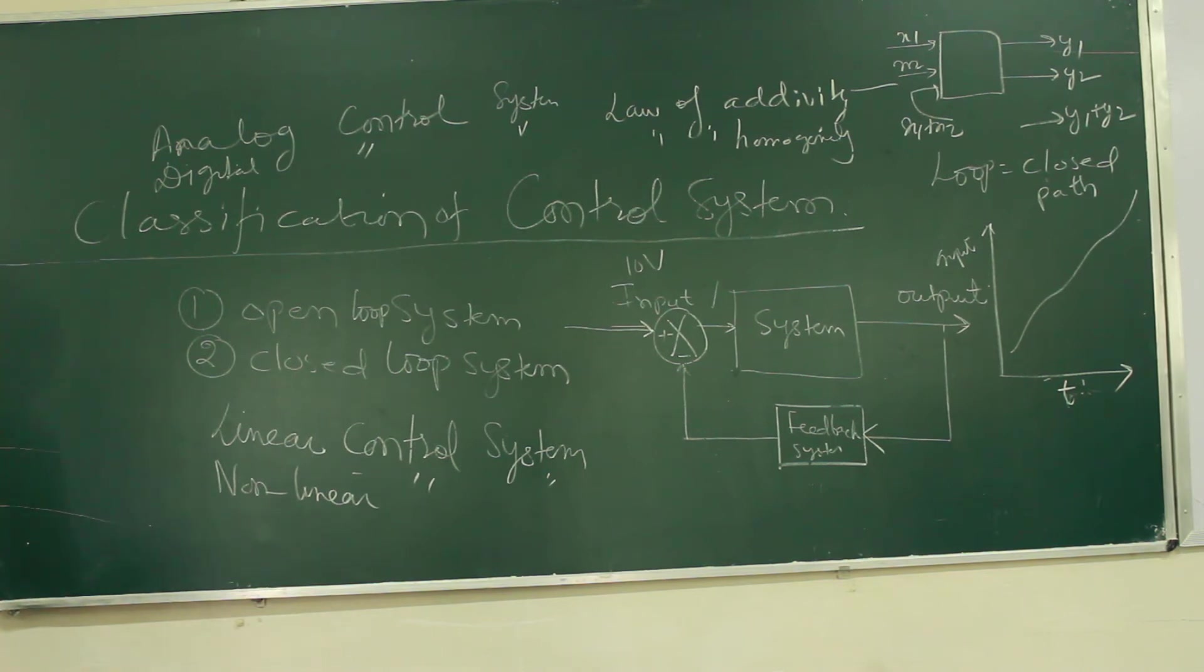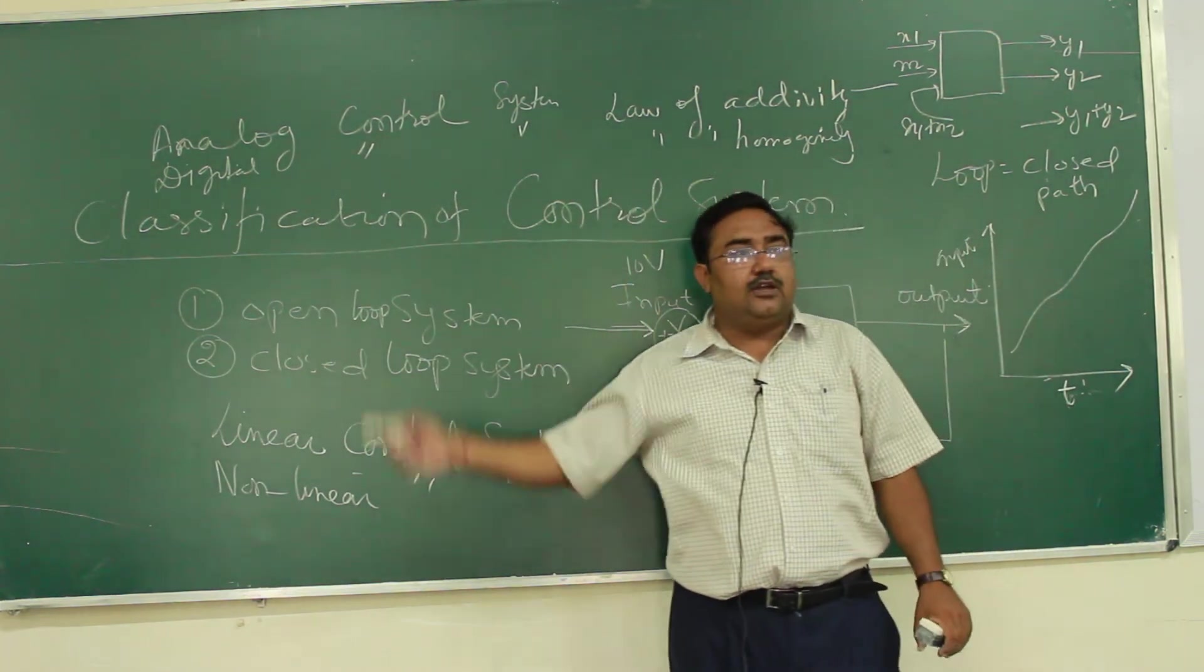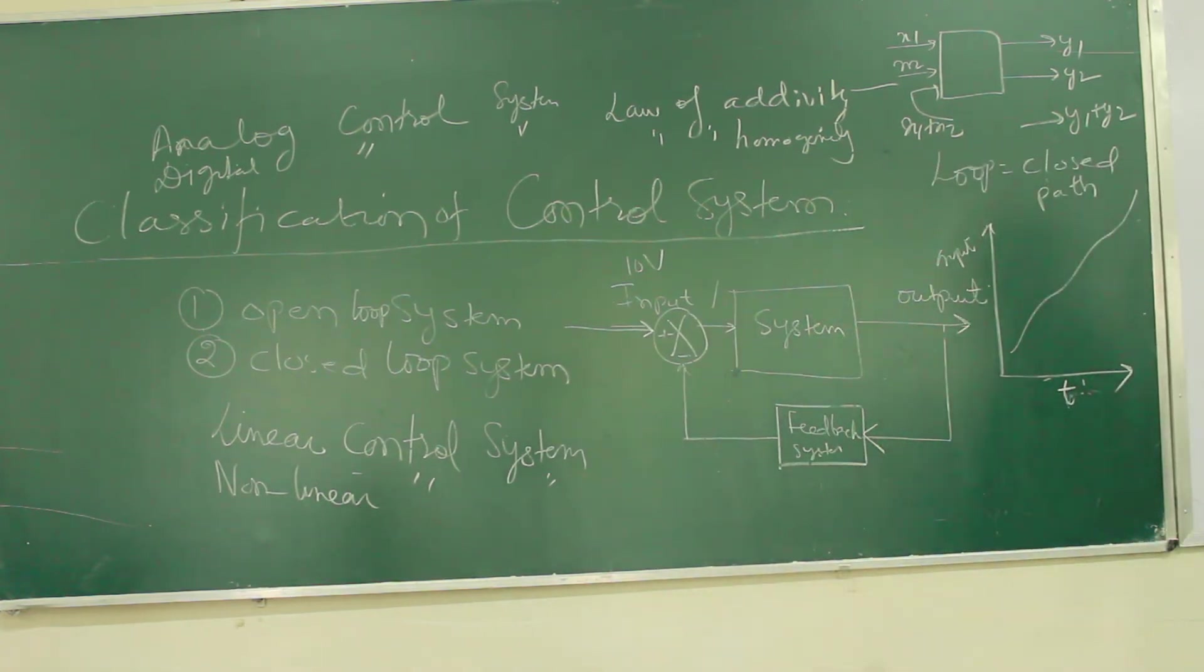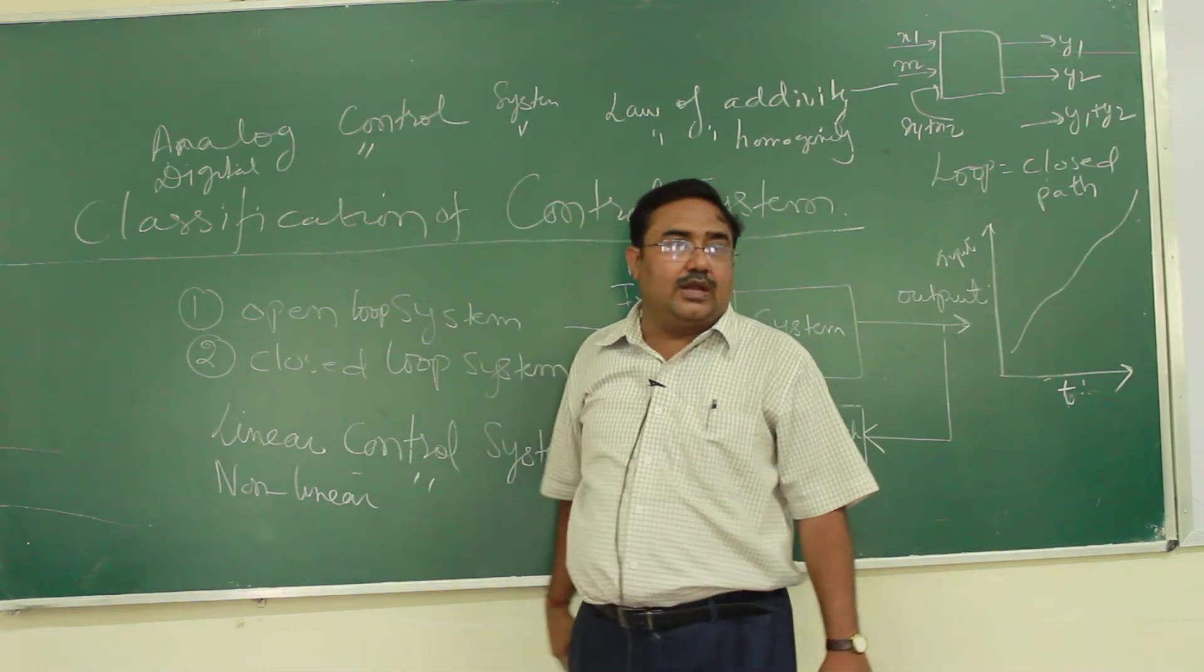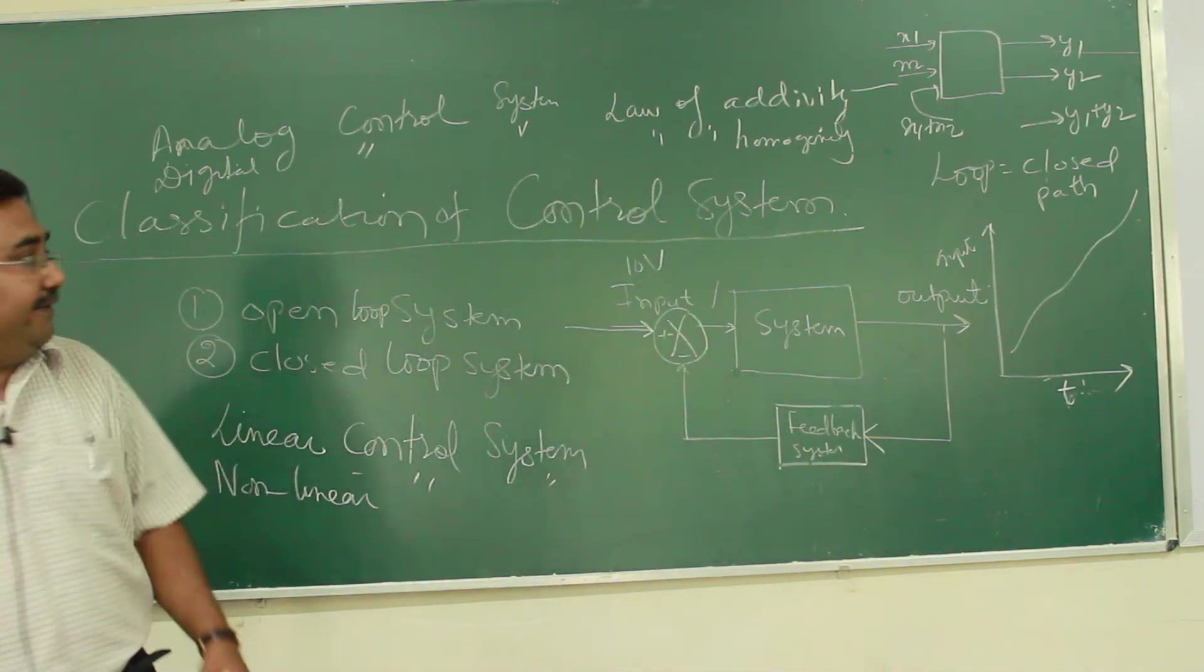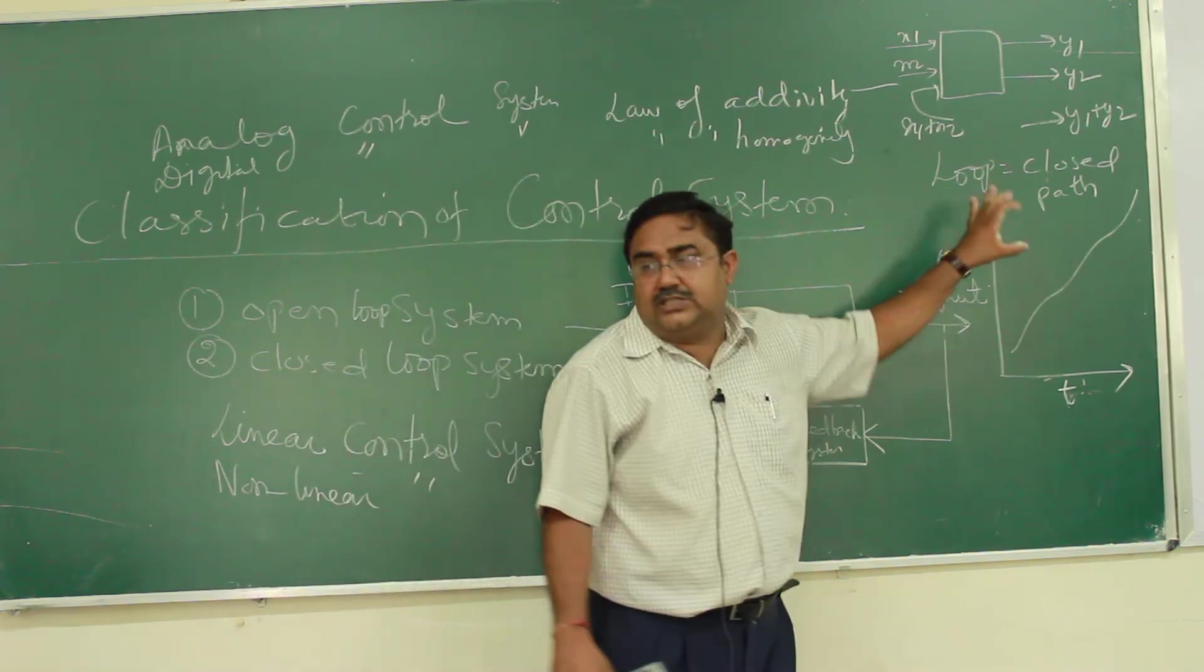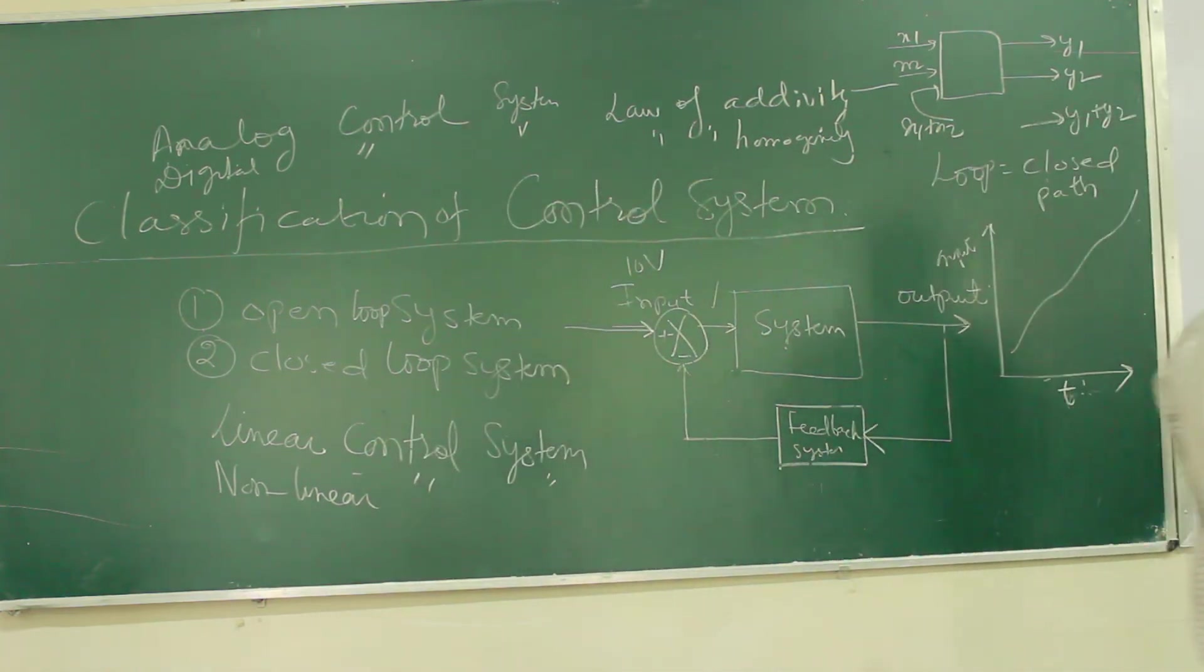So what actually we are doing? We are converting all this continuous data into corresponding digital form, 0 and 1 form. And accordingly, the data are being displayed. So we call such system as a digital control system if you are using digital controller in your system. That is, you are giving input to the system. Though I have shown one system, there are in between a lot of systems there for processing.